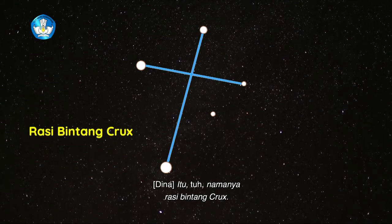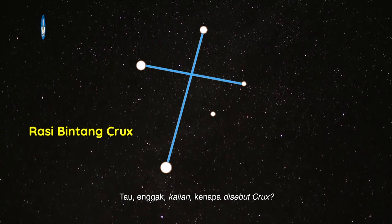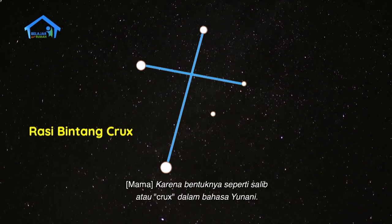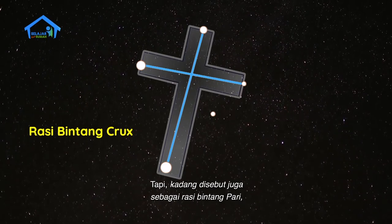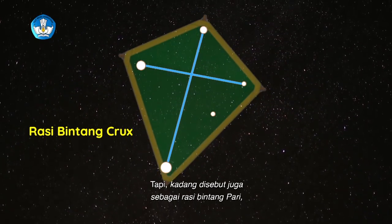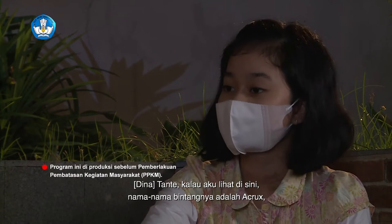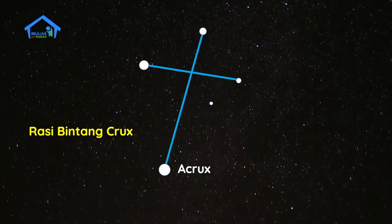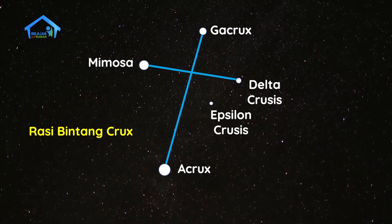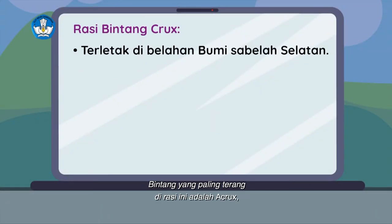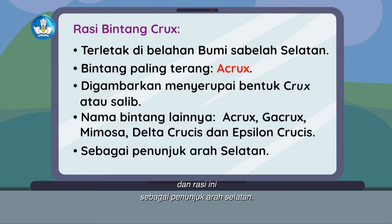Itu namanya Rasi Bintang Kraks. Tahu nggak kenapa disebut Kraks? Karena bentuknya seperti salib atau Kraks dalam bahasa Yunani. Tapi kadang disebut juga sebagai Rasi Bintang Pari atau Layang-layang atau Gubuk Penceng. Nama-nama bintangnya adalah Akraks, Gakraks, Mimosa, Delta Krusis, dan Epsilon Krusis. Bintang yang paling terang di Rasi ini adalah Akraks. Dan Rasi ini sebagai penunjuk arah selatan.